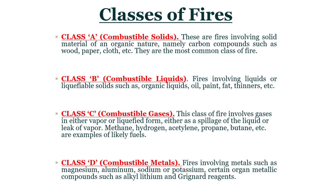Classes of fire in detail. Class A — combustible solids: fires involving solid material of an organic nature, namely carbon components such as wood, paper, cloth, etc. They are the most common class of fire. Class B — combustible liquids: fire involves liquid or liquefiable solids such as organic liquids, oil, paints, fat, thinner, etc.